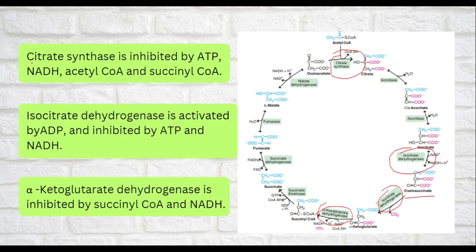First, let's discuss citrate synthase. Citrate synthase is inhibited by ATP, NADH, Acetyl-CoA, and Succinyl-CoA. These four molecules are the inhibitors of citrate synthase.